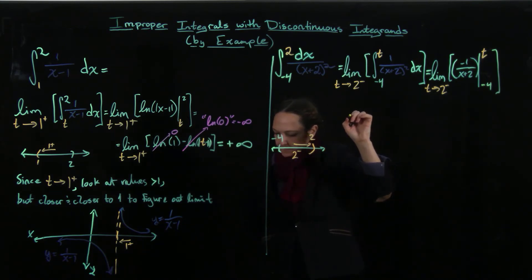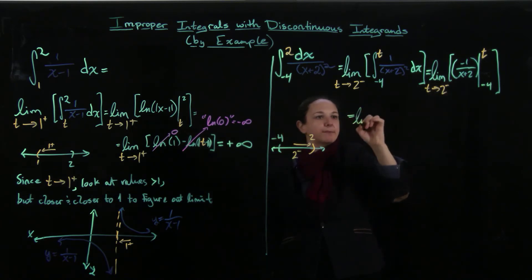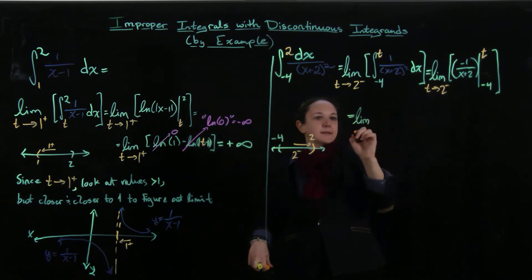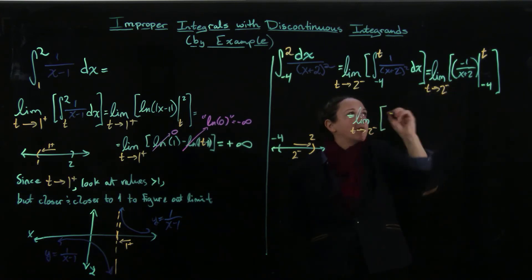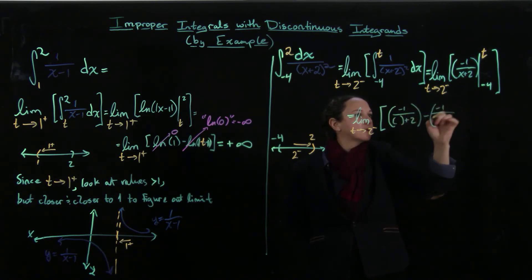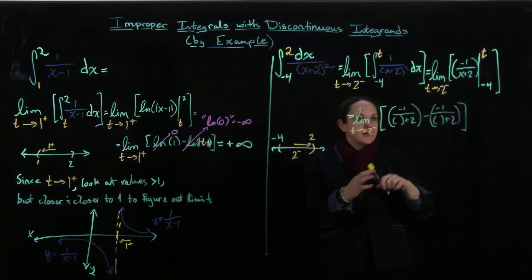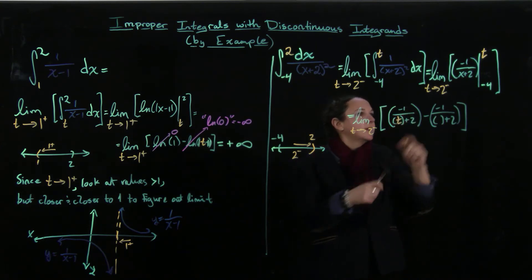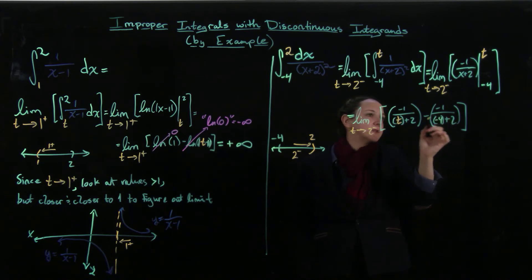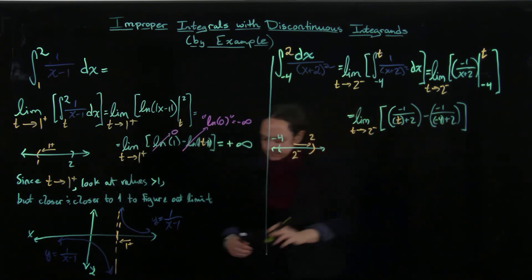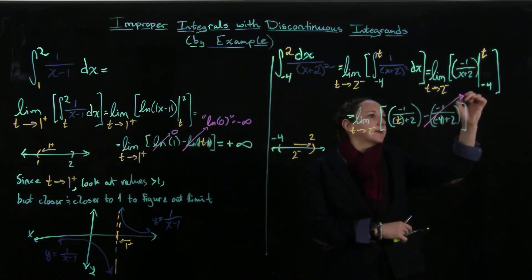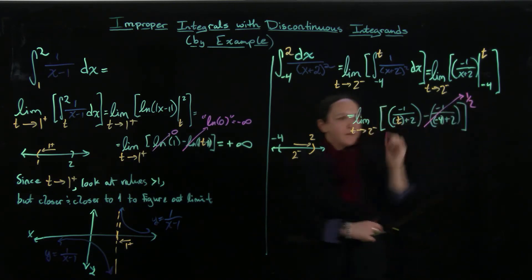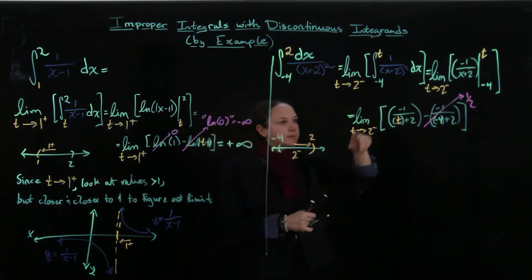Now I'm going to plug in my bounds. So I'm going to get minus 1 over (t plus 2) minus minus 1 over (minus 4 plus 2). The bottom bound gives minus 4 plus 2 equals minus 2, so minus 1 over minus 2 is one half. So I'm subtracting off one half.